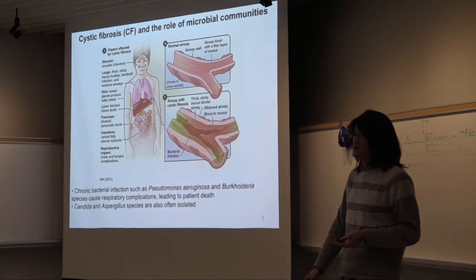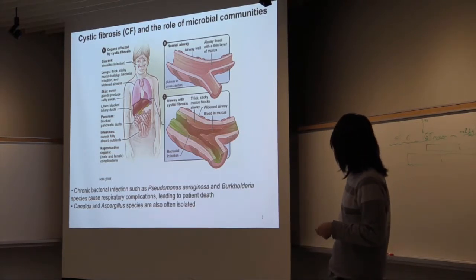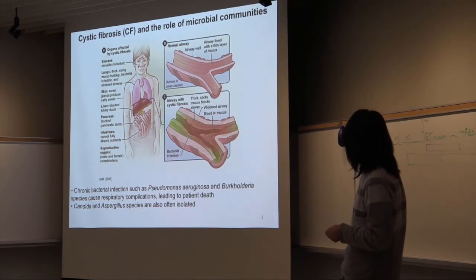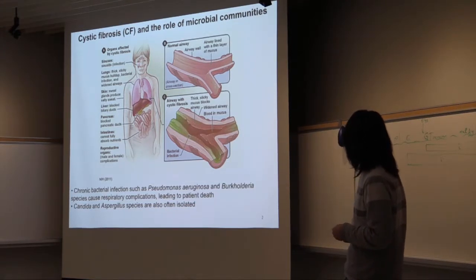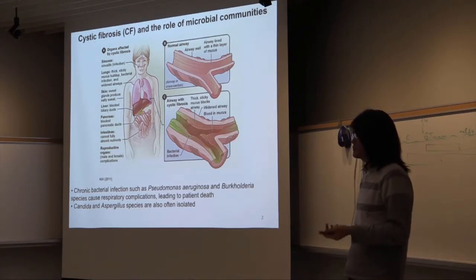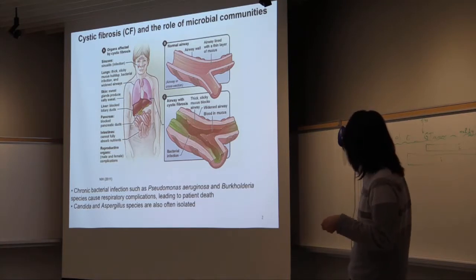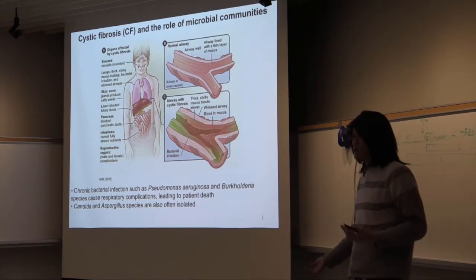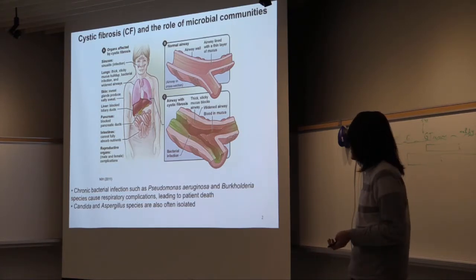Cystic fibrosis is a genetic disorder caused, most of the time, by loss of function in the gene CFTR. It causes a lot of different effects on the human body, but I'm mostly interested in its effect on patient airways, where it causes a thick mucus buildup which provides a favorable environment for microbial infections. Bacterial infections such as Pseudomonas aeruginosa and Burkholderia species cause respiratory complications, eventually leading to patient death.